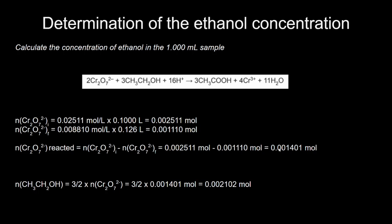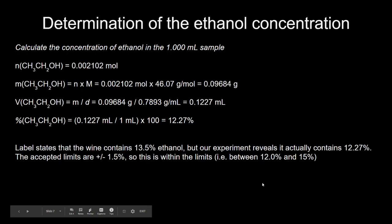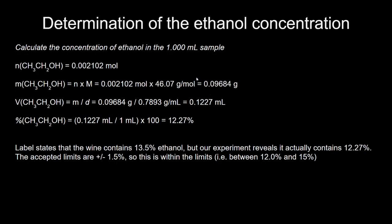I figured out how much dichromate was consumed, and now I can use the stoichiometric ratio in the second equation provided to convert moles of dichromate into moles of ethanol using the 2 to 3 ratio. Now that I've figured out the moles of ethanol, I'll convert moles into a mass using the molar mass given in the question, and then convert mass into a volume since this is a percent by volume basis. Taking the mass of ethanol and dividing by the density gives a volume, and I've calculated that this one milliliter sample of wine contains 12% ethanol — just within our range of 12 to 15%.